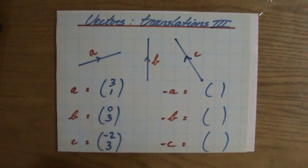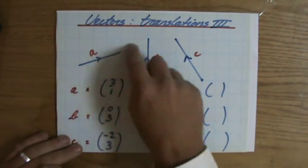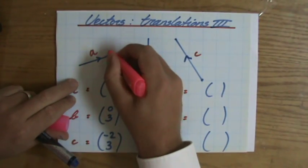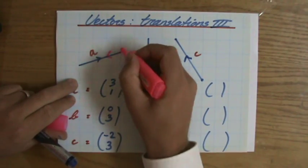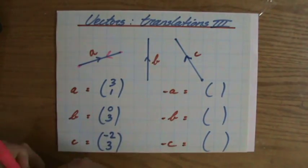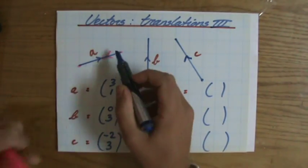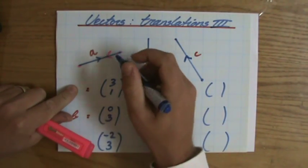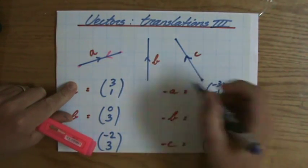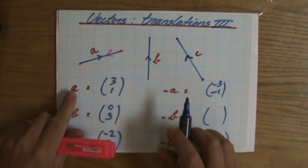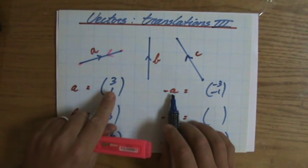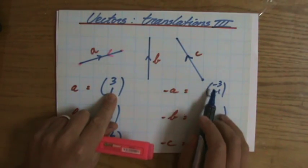Now what does minus a mean? Minus a means vector a but in the opposite direction. The direction now goes that way — from here to there — and it's going to be very important to realize this as we do vector geometry in the near future. So from there to there, horizontally it's one, two, three, so minus three, and then one down, so minus one. As you can see, minus a is exactly the same as a but with opposite signs.